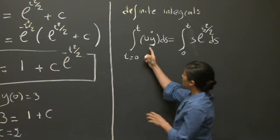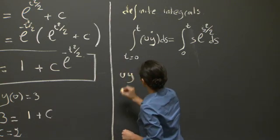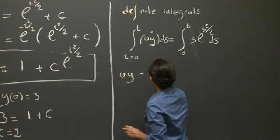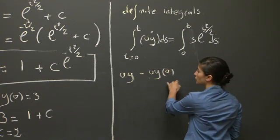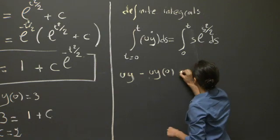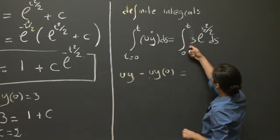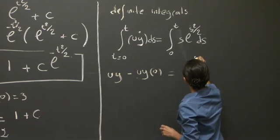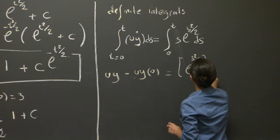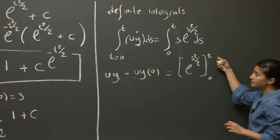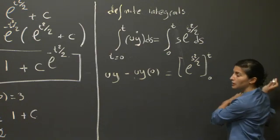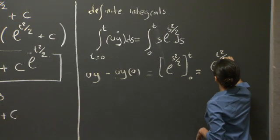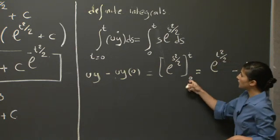Using definite integrals, the left-hand side gives us u·y evaluated at t minus u·y evaluated at 0. On the right-hand side, we recognize the integrand as the derivative of e^(s²/2), evaluated between 0 and t. Carrying out the right-hand side, we get e^(t²/2) minus e^0, which is e^(t²/2) minus 1.